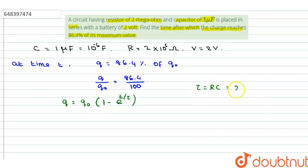So, value of R is equal to 2 into 10 to the power 6 and C is equal to 10 to the power minus 6. Therefore, the tau value is equal to 2 seconds.